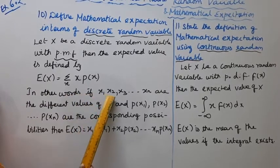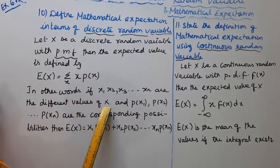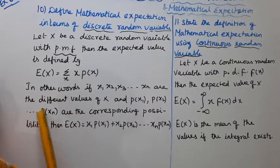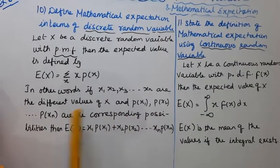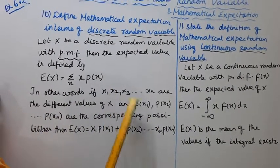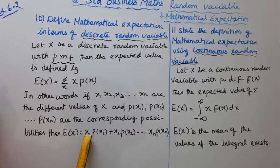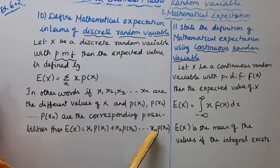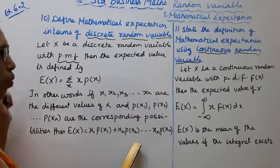if x1, x2, x3 up to xn are the different values of x, and p(x1), p(x2), p(xn) are the corresponding probabilities, then E(x) = x1·p(x1) + x2·p(x2) + ... + xn·p(xn).